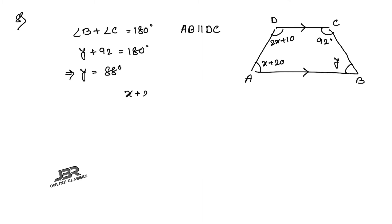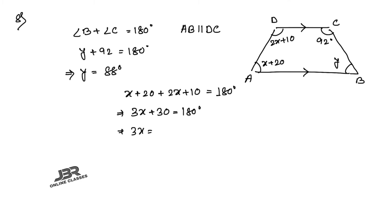To find x: since AB is parallel to DC, angle A + angle D = 180°. So (x + 20) + (2x + 10) = 180, giving 3x + 30 = 180, so 3x = 150, and x = 50°. Final answers: y = 88° and x = 50°.